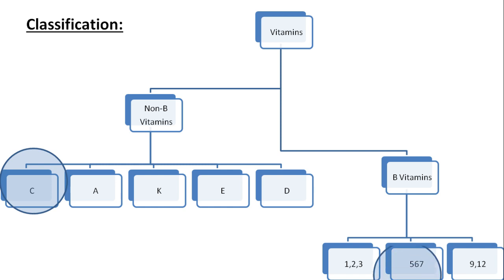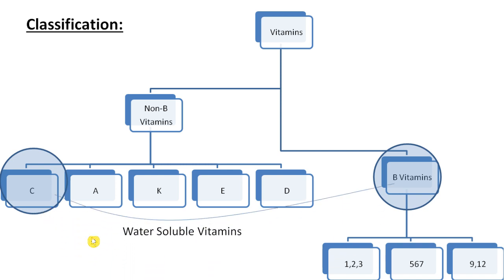Now, looking at the two extremes: vitamin C and vitamin B are your water-soluble vitamins, while vitamins A, K, and D in the middle are your fat-soluble vitamins. So at the extremes you have water-soluble vitamins, and in the middle you have the fat-soluble vitamins.